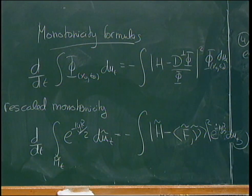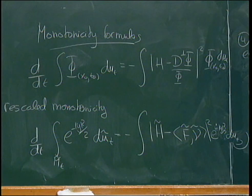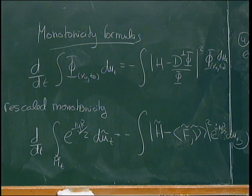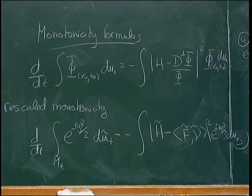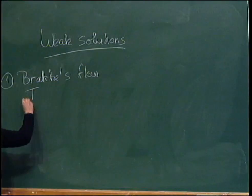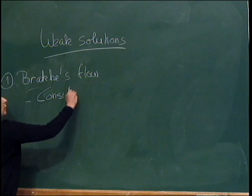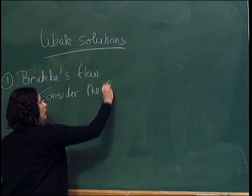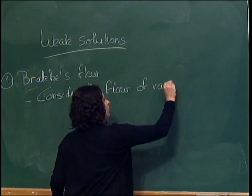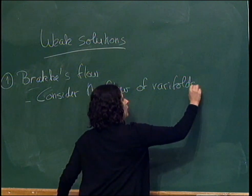This is more or less chronological, so I'll start with Brakke flow. Brakke flow is actually older than everything I've talked about here — Brakke's thesis in the late 70s. He tried to set up mean curvature flow in the context of geometric measure theory, very much related to the varifold theory that Rafael has been discussing in his class. The idea here is to consider the flow of varifolds — varifolds in an integral sense.